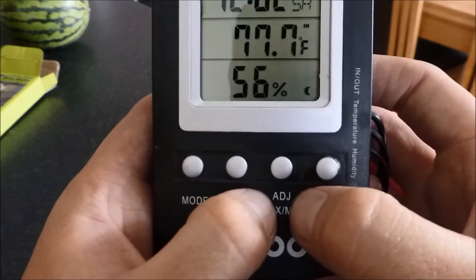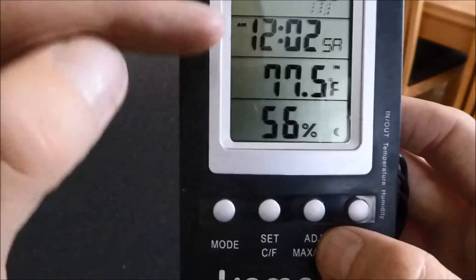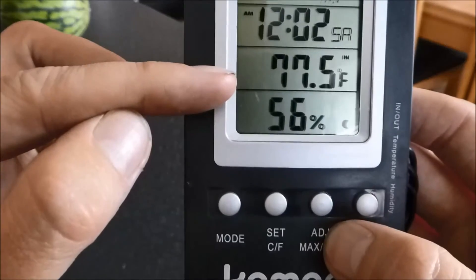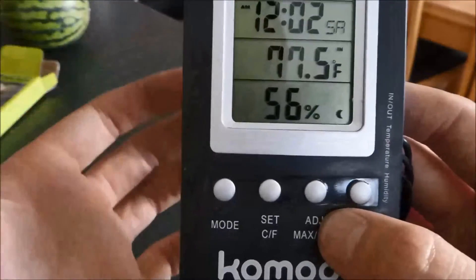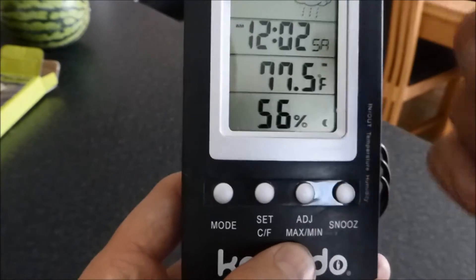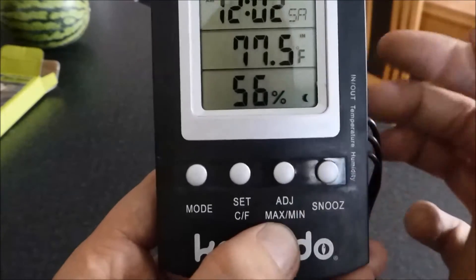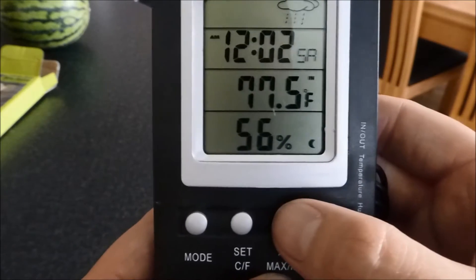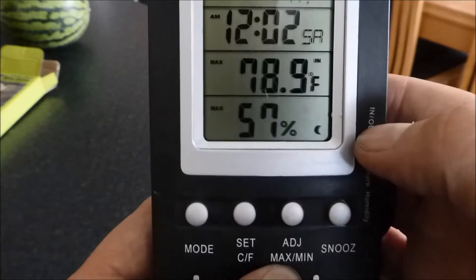You've got adjust. That is used when you're changing things such as time, high and low alarm for your temperature, high and low alarm for your humidity. When you're not in the program mode, it is a maximum and minimum button. If you press it, you'll notice that next to the temperature it now says maximum.